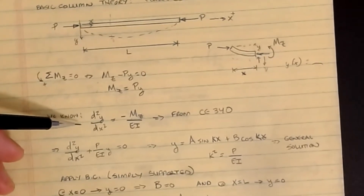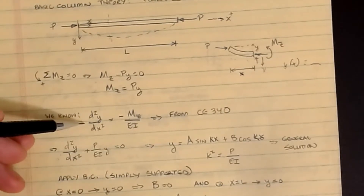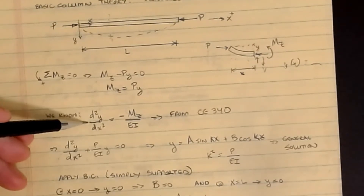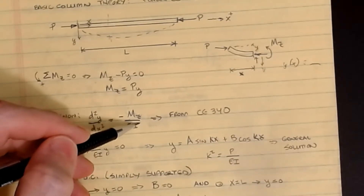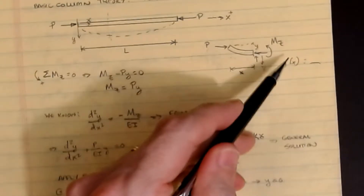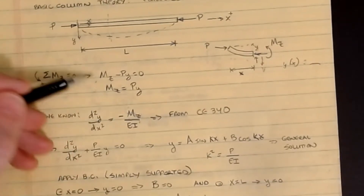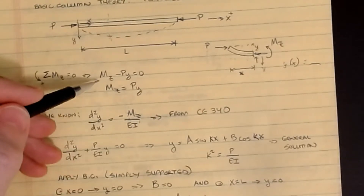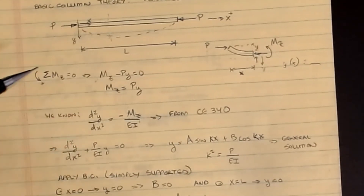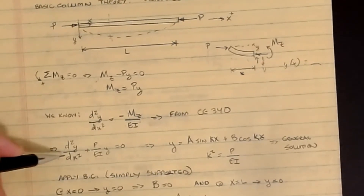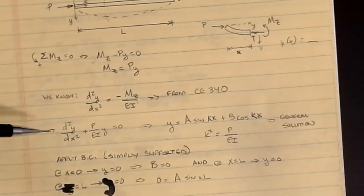From structural analysis, one of the most important equations for computing deflections is that the second derivative of the elastic curve y with respect to x equals negative M over EI. Substituting our moment expression — Mz equals P times y — into this equation and rearranging, we divide everything by EI to get: d²y/dx² plus (P/EI) times y equals zero. This is an ordinary second-order differential equation.